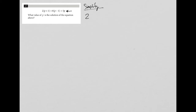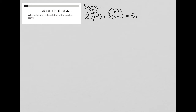So I'm going to rewrite what I've been provided: 2 times (p + 1) plus 8 times (p - 1) is equal to 5p. To simplify this, I'm going to distribute the 2 across the parentheses, distribute the 8 across the parentheses, and then we will combine like terms.